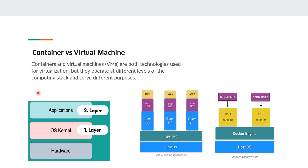If you're looking at our operating system, it's going to comprise the OS kernel and the applications. The question is: what part of the operating system does the container virtualize, and what part does the virtual machine virtualize? For containers, it virtualizes only the application layer of the operating system. For VMs, they virtualize both the application and the OS kernel.